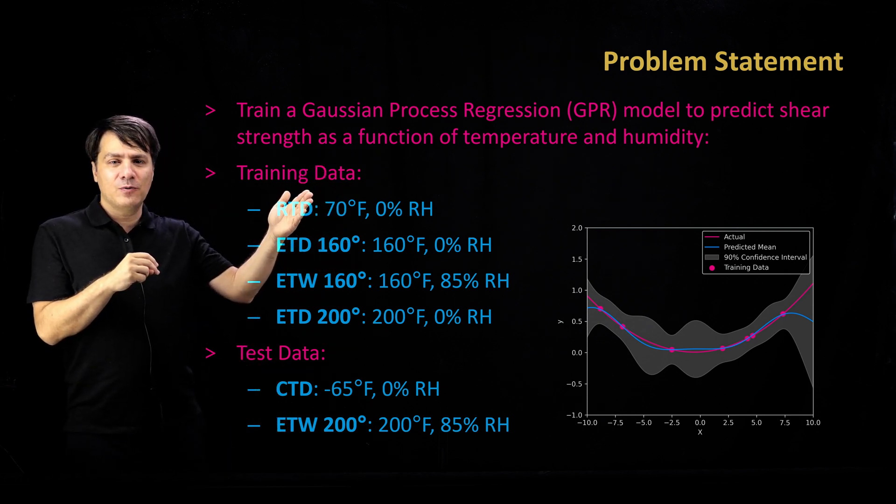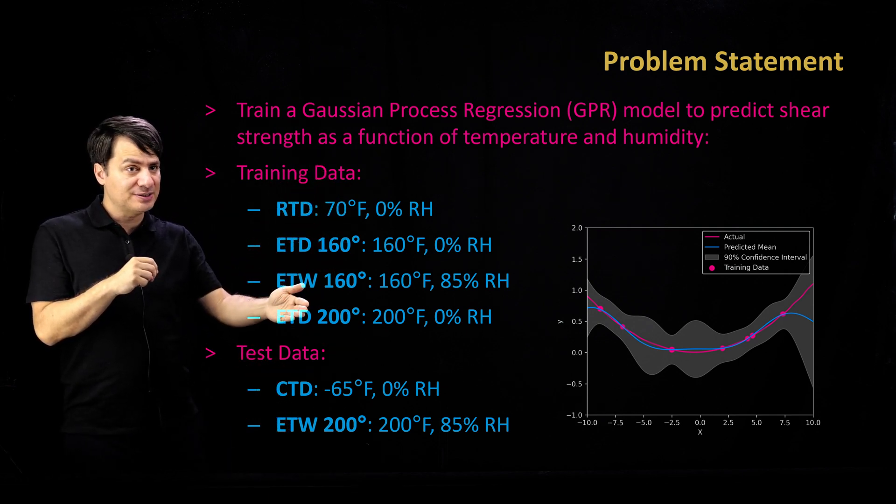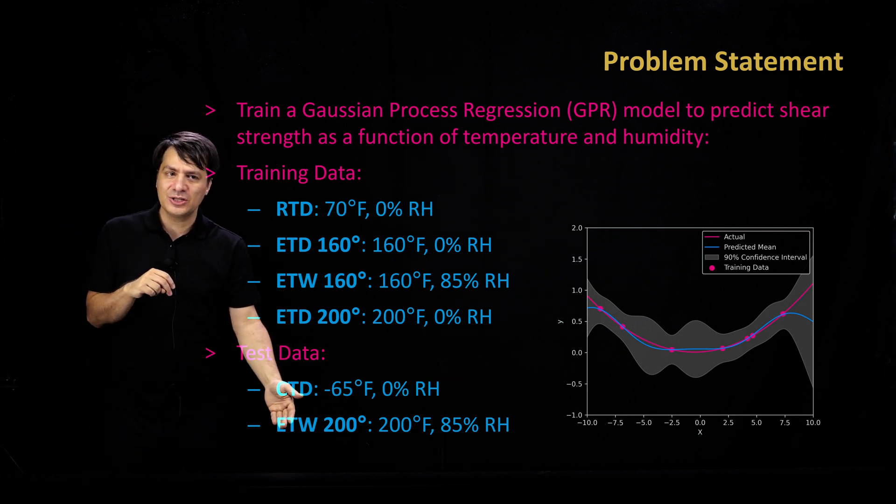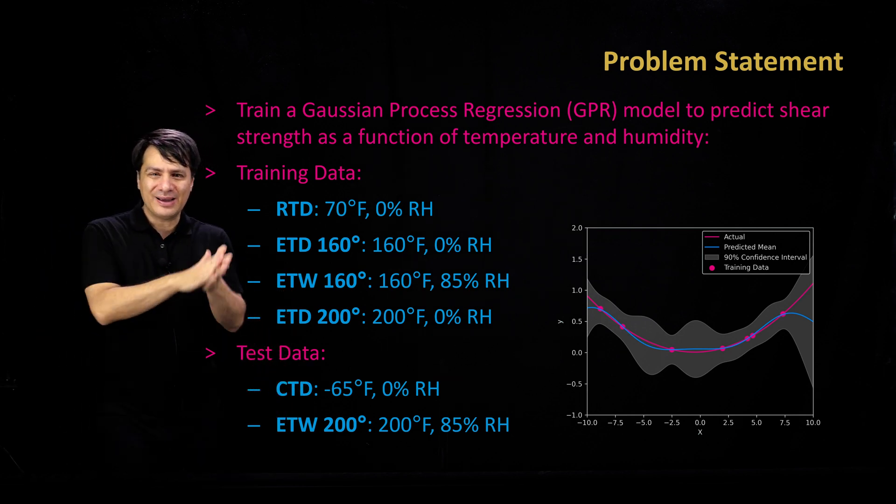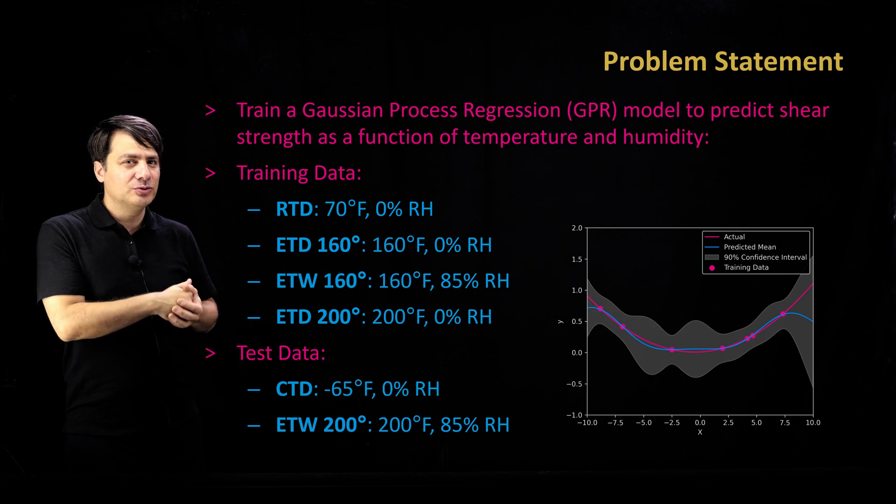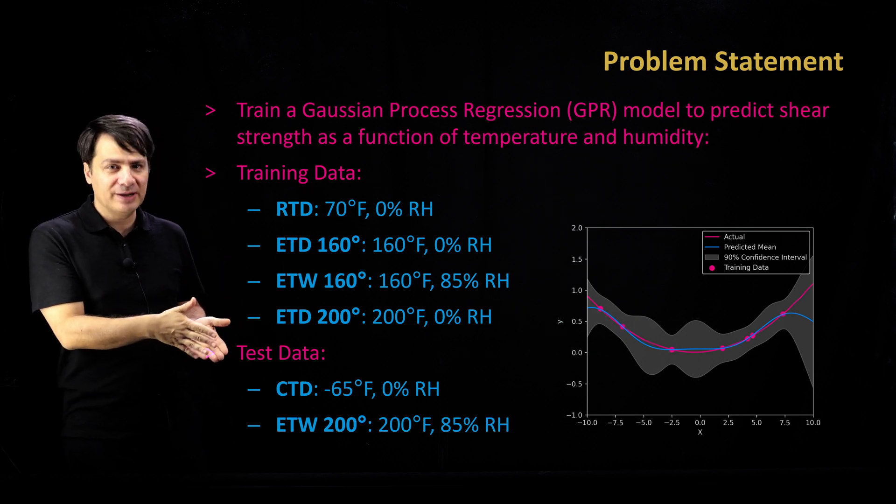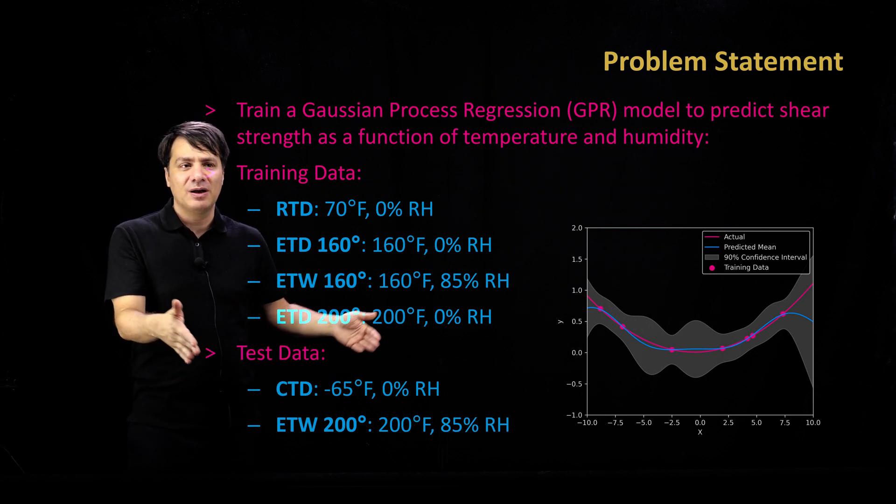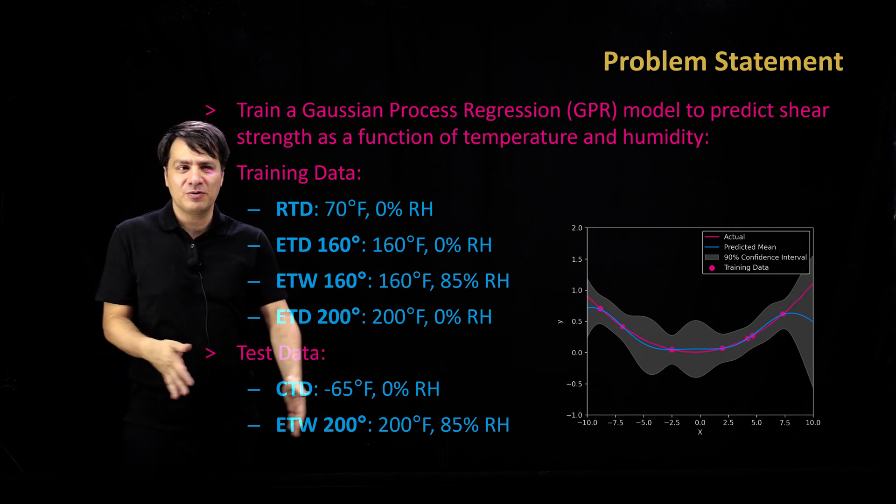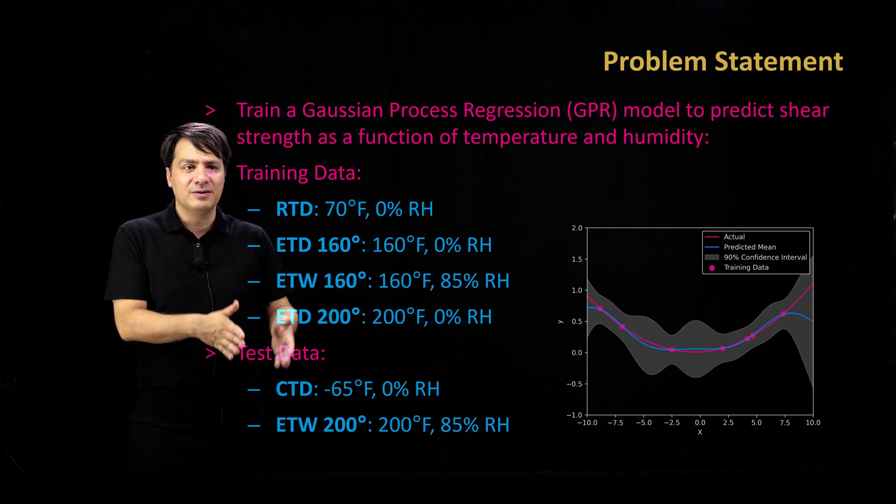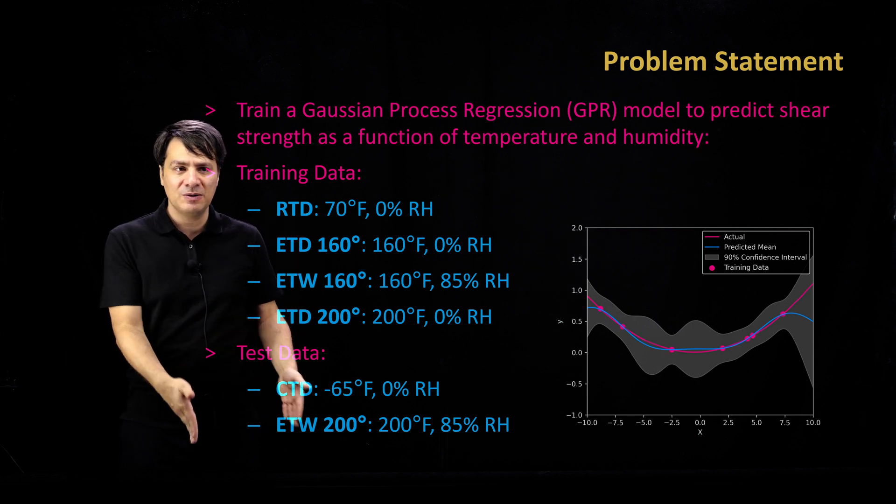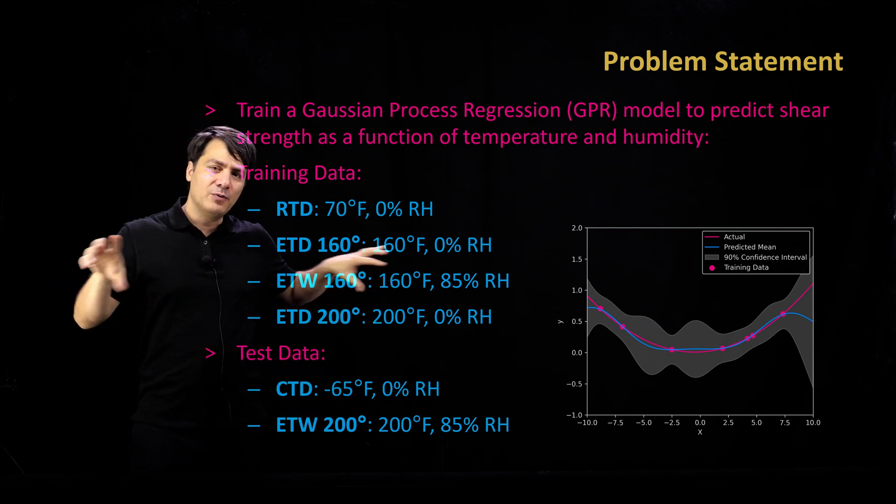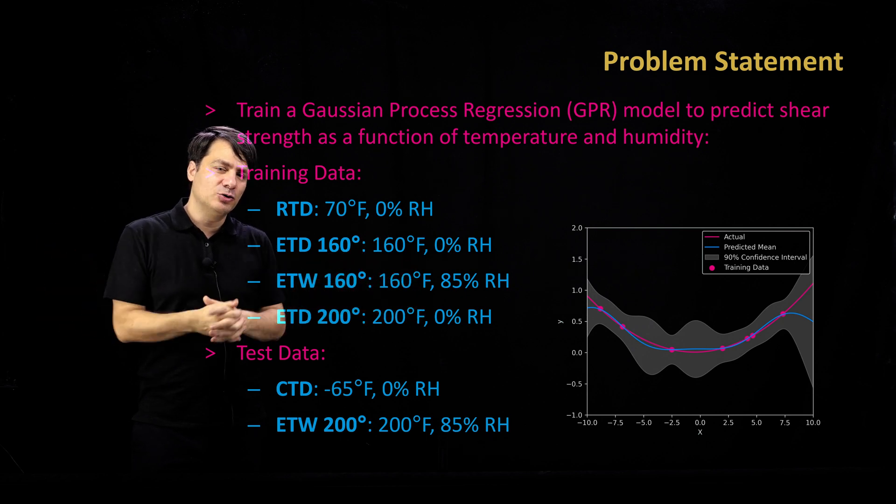And then we're going to set four of these conditions as training data and two of these conditions as test data. I have set it in a way to make it more difficult for machine learning on purpose. The two conditions that are test data are more extreme: one is very cold temperature, the other is very high temperature. The one which is cold is 0% humidity. The one which is hot is 85% humidity. So I've set it at the edges of our domain.